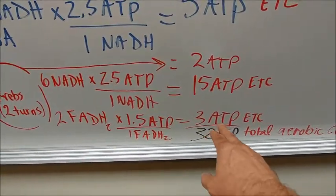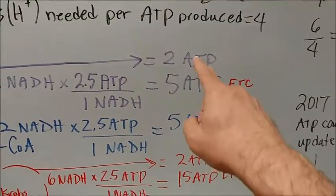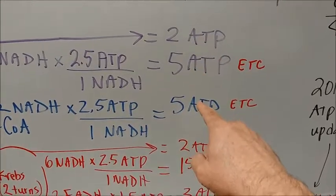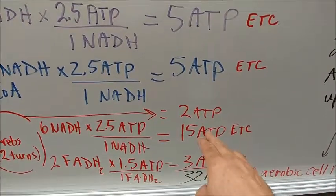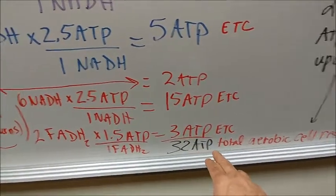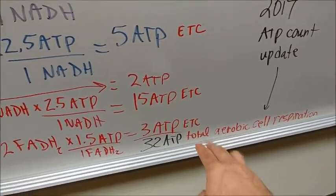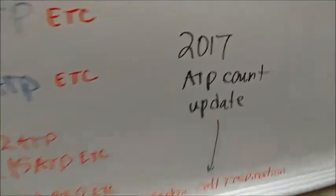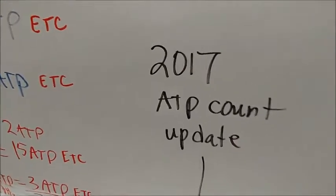2 times 1.5 is 3. So when we add this count: 2 plus 5 is 7, plus 5 is 12, plus 2 is 14, plus 15 is 29, plus 3 makes 32 ATP per molecule of glucose in total aerobic cell respiration. This is a 2017 ATP count update.